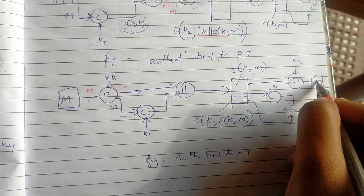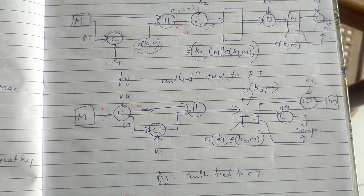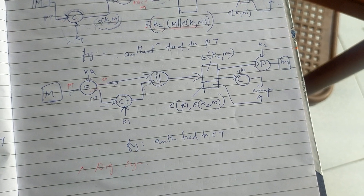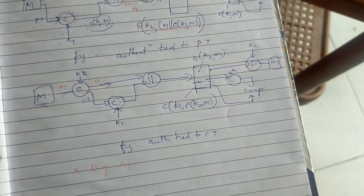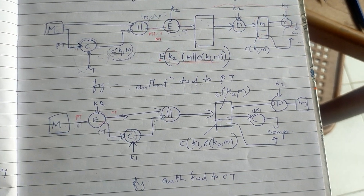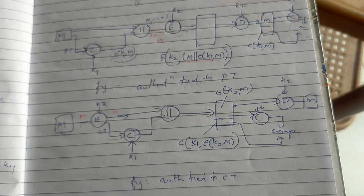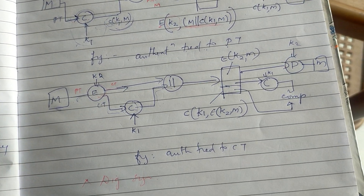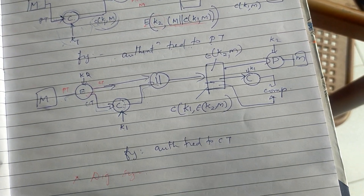Sender and receiver share the same key — that is the limitation. MAC does not provide digital signature. In the next class, we have the hash function. So we have three functions: one is encryption, two is MAC, and the third is hash function. Encryption and decryption provide confidentiality. Authentication verifies the message is from the sender.